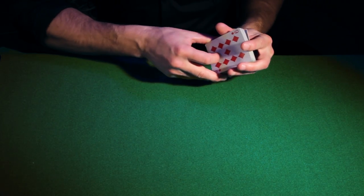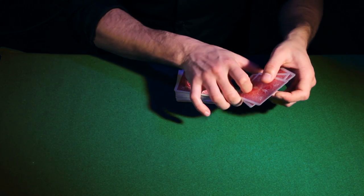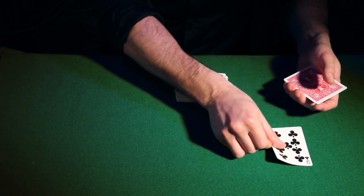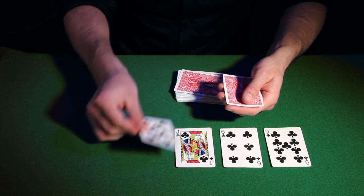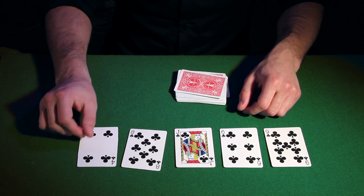The next hand is all about the suit. This is the flush. Five cards of the same suit. In this case, clubs.